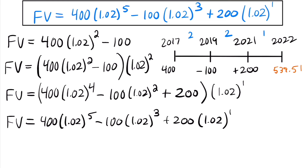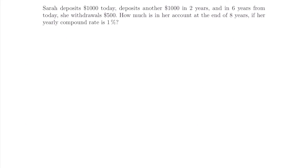So if we just compound each individual transaction for the full length it's in the timeline, it's the same as doing them individually for each part of the timeline. Now we can always use the short way because we know it's always going to be right if we set up our timeline correctly. Let's test our skills with this short method and do one more example — the last one for this lesson.